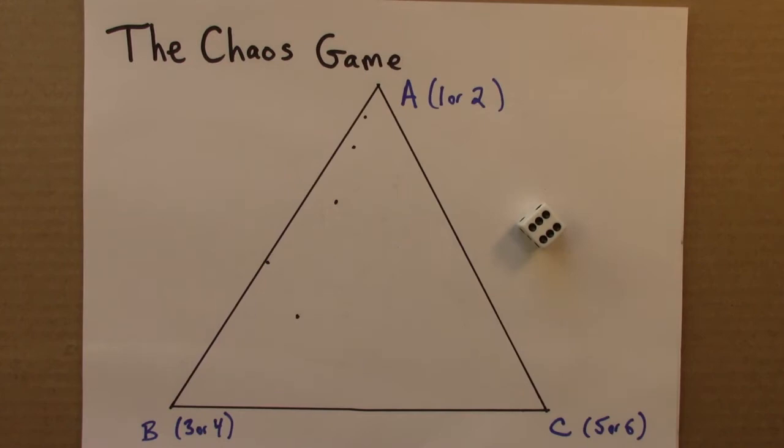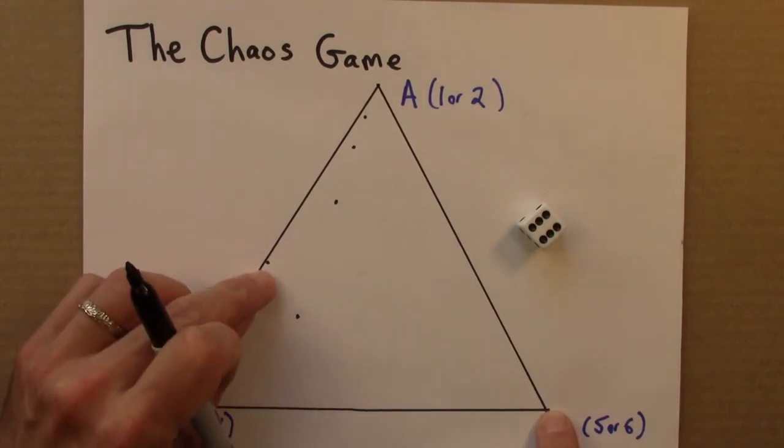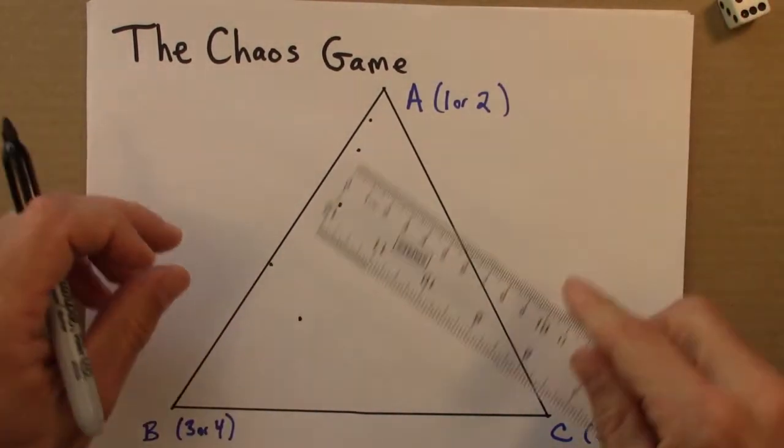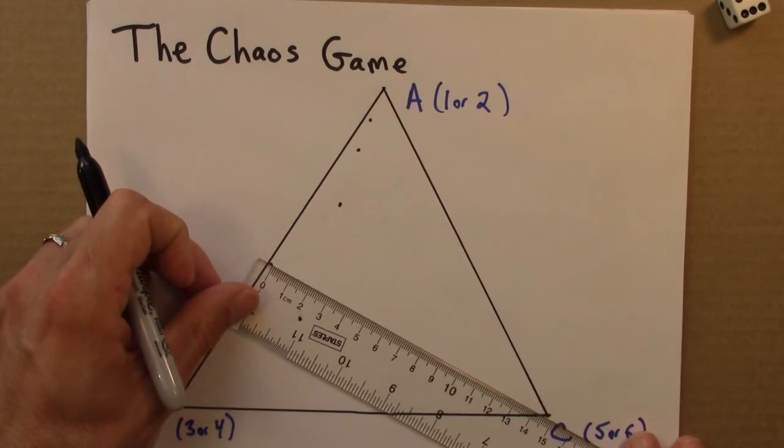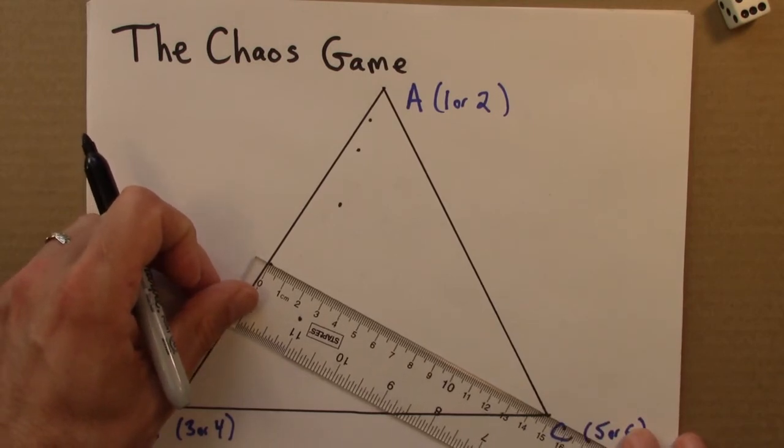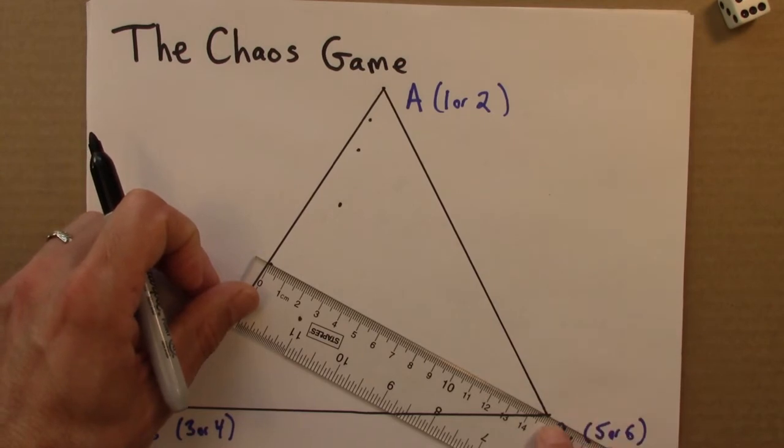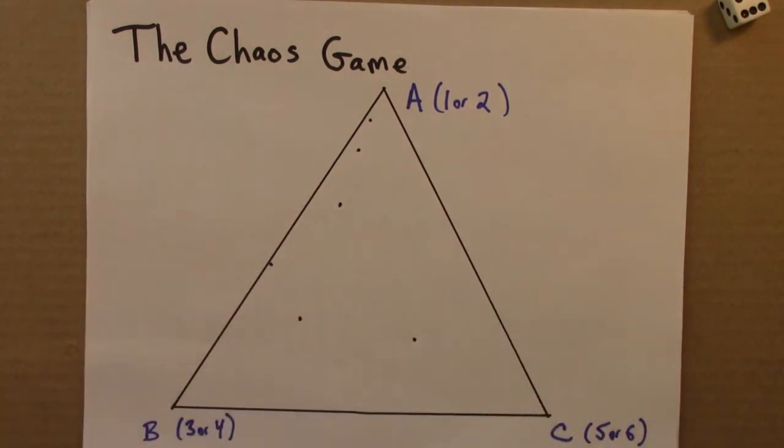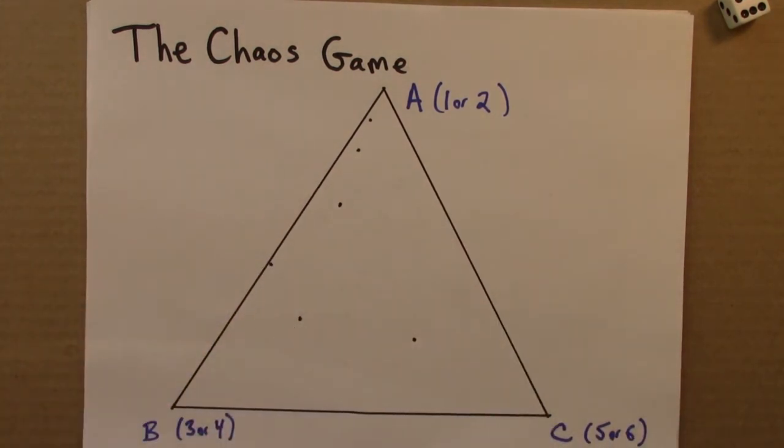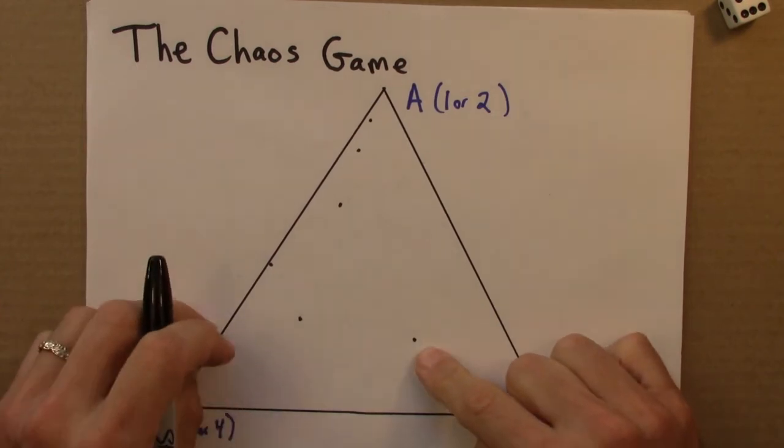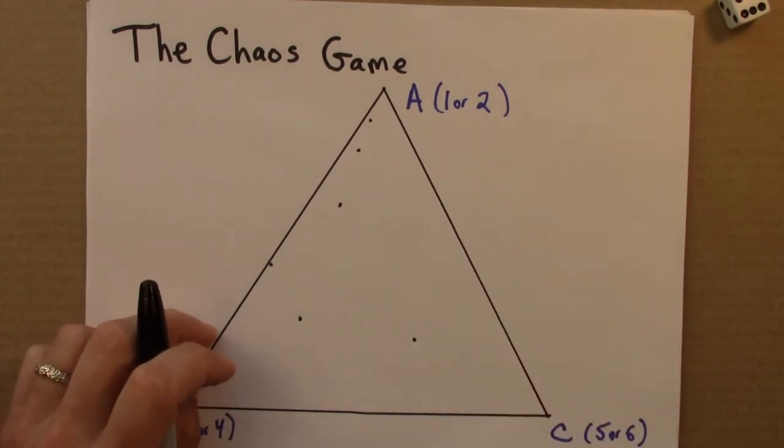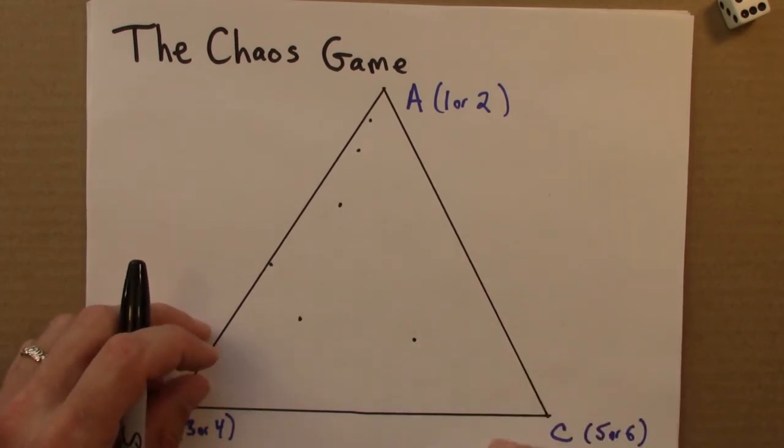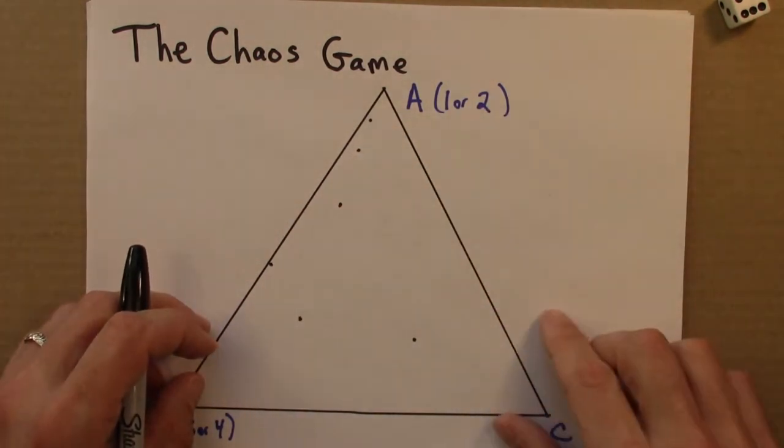One more. Got a 6. So now I'm going to go halfway to this corner here. Alright. So this is where I am currently. And we're going to go halfway from my current point to C. And it's a little less than 15. So I'm going to go a little bit more than 7 and a half. So I could keep going in this way, and I would make more and more dots. And the question is, what would happen if I did this for 50 steps or 100 steps or 1000 steps? What happens to the dots as they bounce all around the triangle?